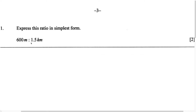When we look at this, we must notice that they give us units. And because they give us units, it's important for us to look at these units to make sure they are the same. They give us meters and they give us kilometers. Are these two units the same? No, meters and kilometers are not the same unit. Because they are not the same unit, we're going to have to convert one of the units.